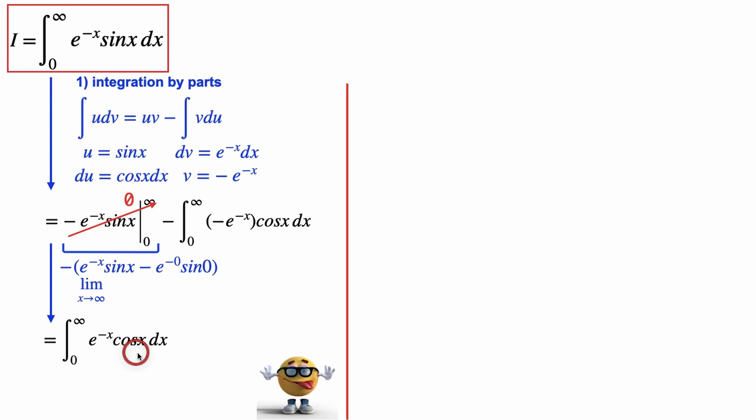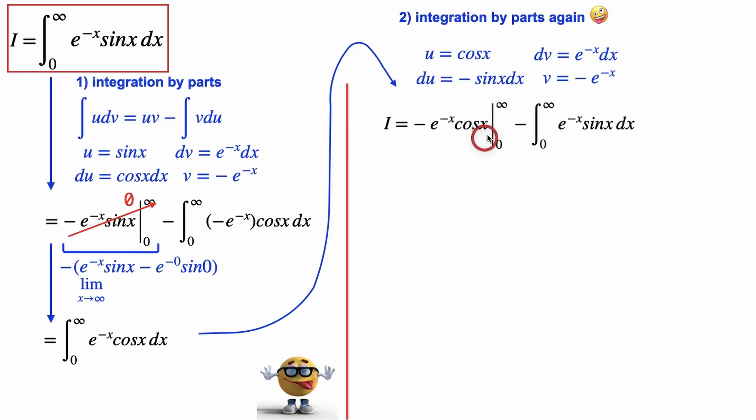But this is the trick. What we're going to do is integration by parts again. And if we plug this into our integration by parts formula, we get u times v from zero to infinity minus the integral of v du.